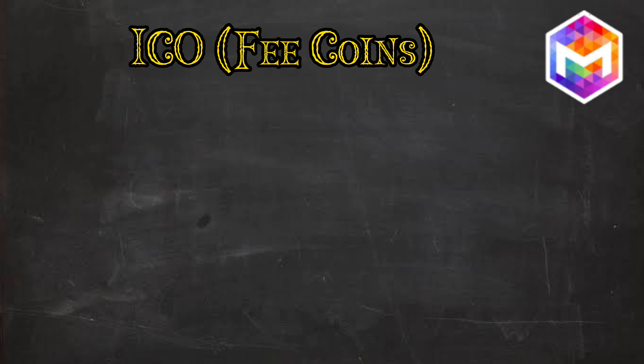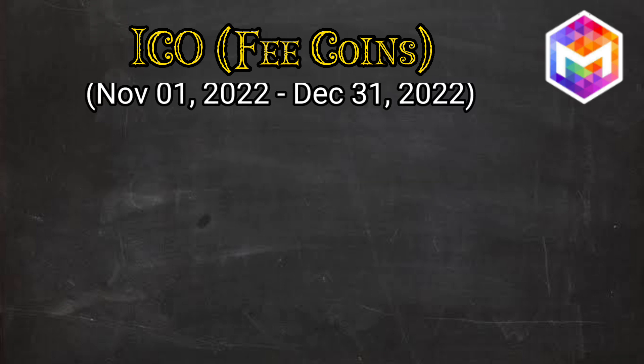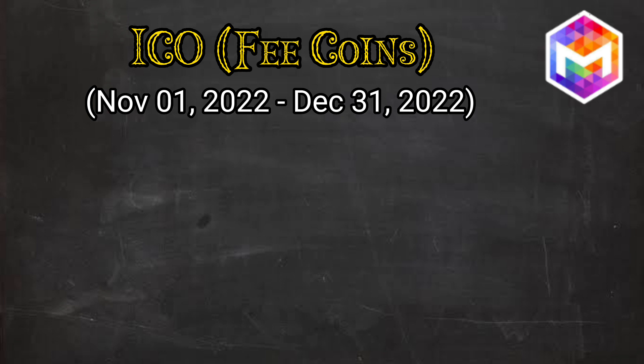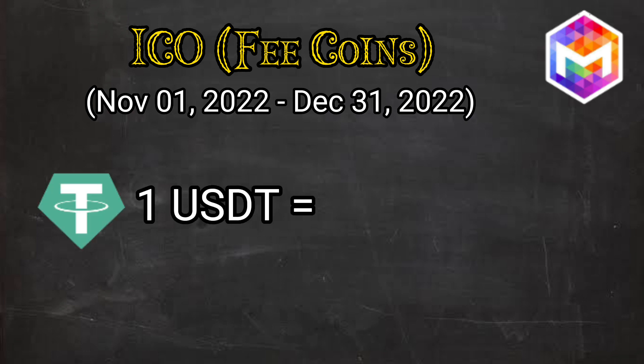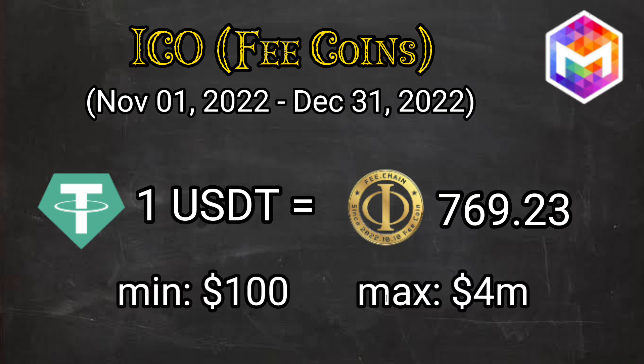I will make another detailed video on the ICO of the fee chain very soon. For now, I will cover the basics. ICO stands for Initial Coin Offering — a process through which a buyer can get early access to coins at very cheap rates. The ICO of the fee coins will start from November 1, 2022 and will continue till December 31, 2022. As per the Mojak White Paper, for one USDT, you can get 769 fee coins.